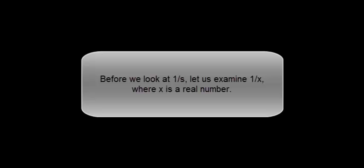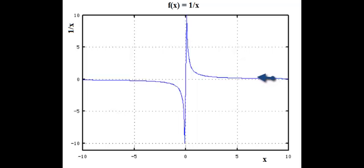Before we look at 1 over S, let's examine 1 over X, where X is a real number. As X is large, positive, and getting small, going towards zero, 1 over X gets larger and larger, and goes toward positive infinity.